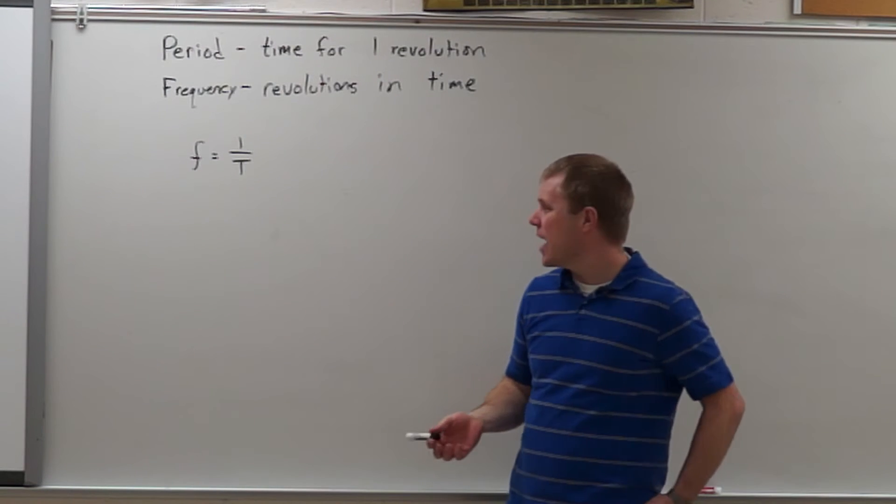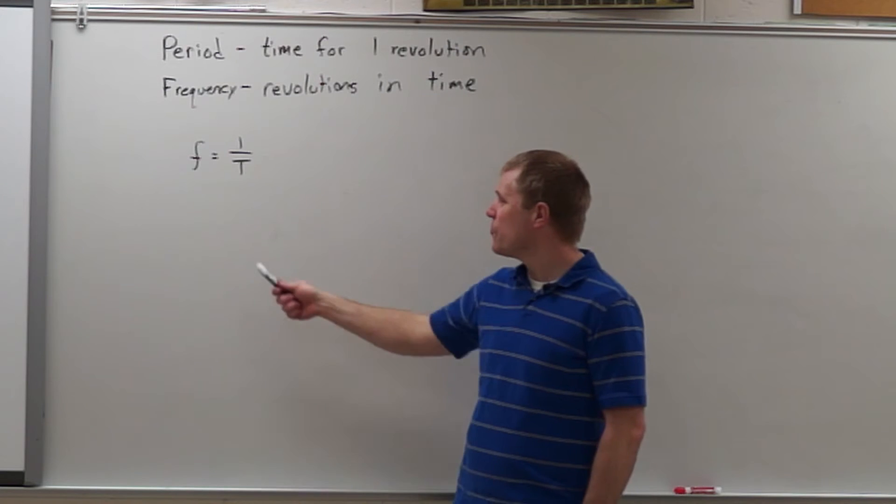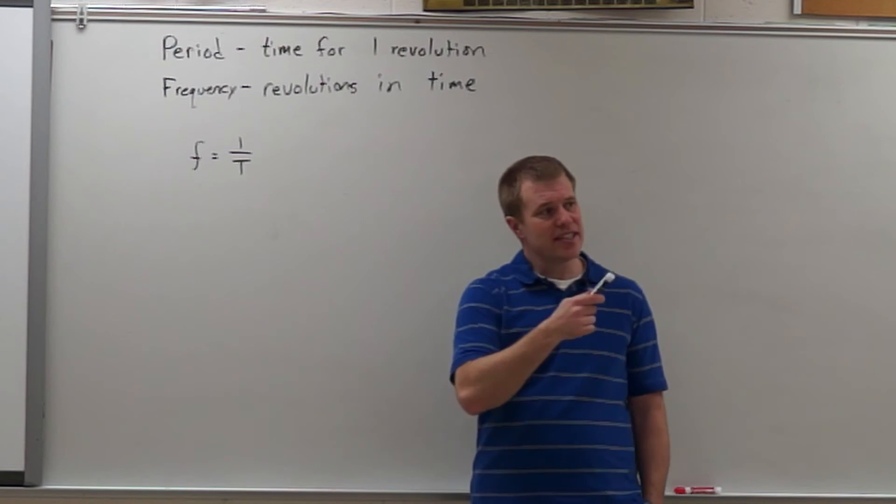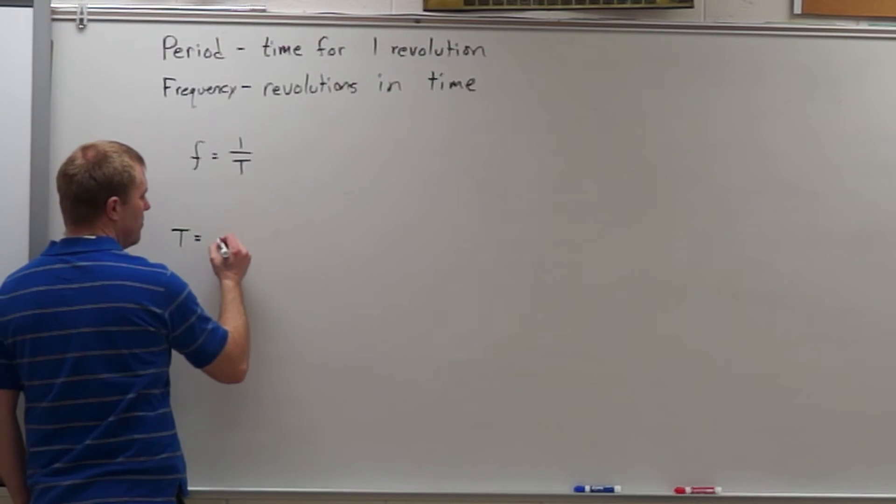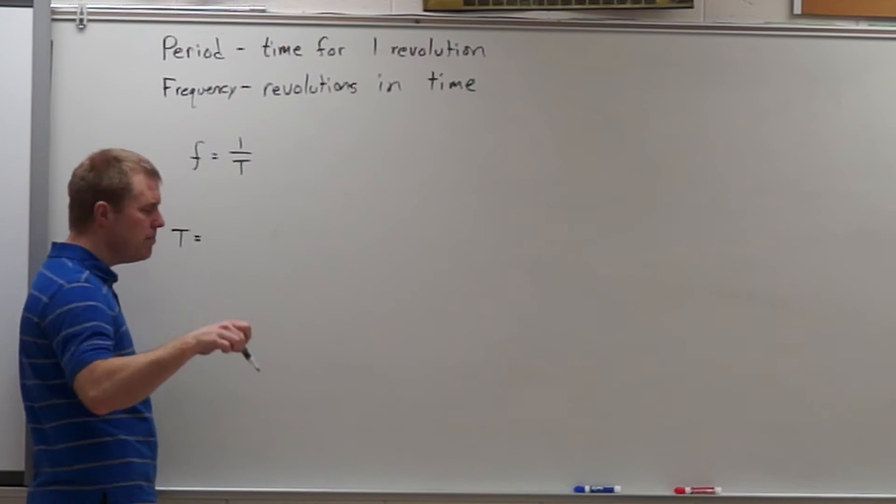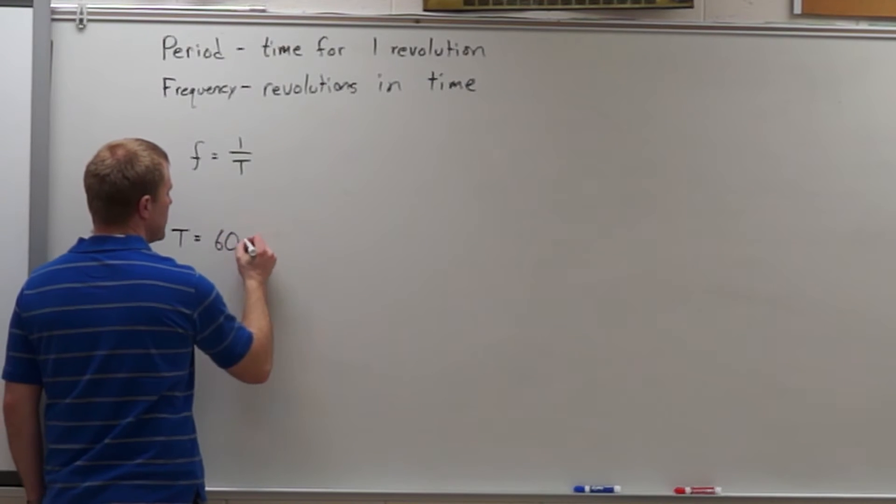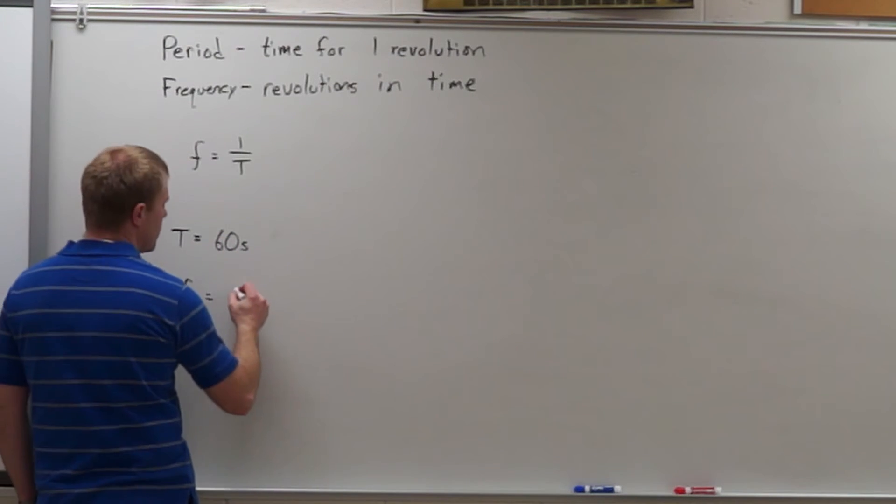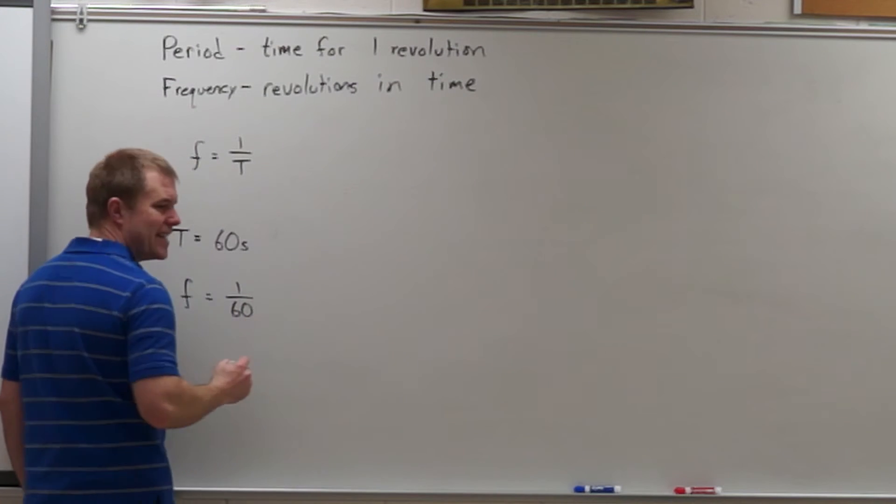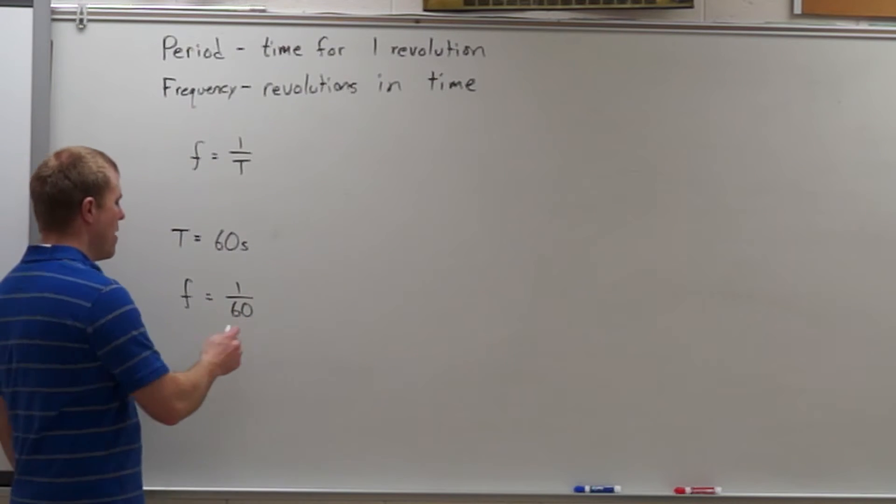The example we're going to look at is what is the frequency of the second hand on a clock? The second hand on a clock has a period of, how long does it take to go around one time? Well, one minute or 60 seconds. So my frequency then is going to be one over 60.